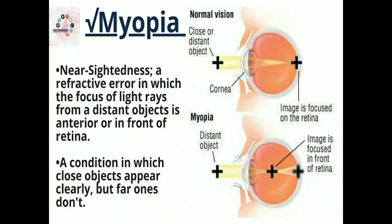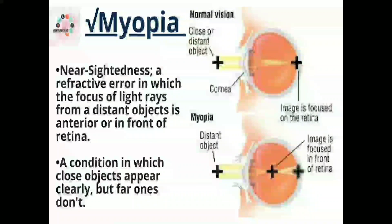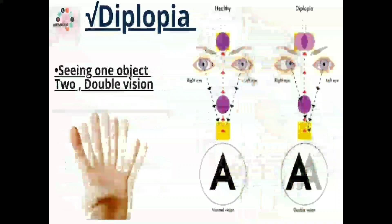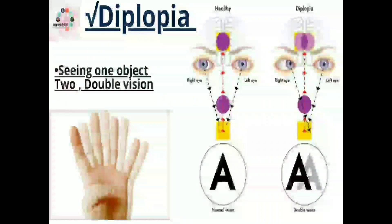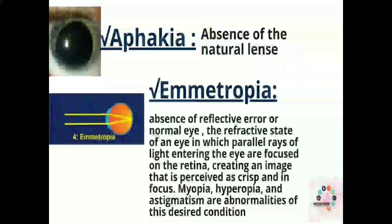Next is myopia, also called nearsightedness. As you can see in the picture, it is a refractive error in which the image is focused in front of the retina, so close objects appear clearly but far ones do not. Next is diplopia — just like its name implies — which means seeing one object as double vision.